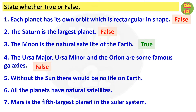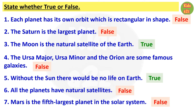Number four: Ursa Major, Ursa Minor and Orion are some famous galaxies. This is also false, because Ursa Major, Ursa Minor and Orion are some famous constellations. Number five: without the Sun there would be no life on Earth. That is true. Number six: all the planets have natural satellites. False, because Mercury and Venus don't have any satellites. Number seven: Mars is the fifth largest planet in the solar system. This is also wrong, because our Earth is the fifth largest planet in the solar system.